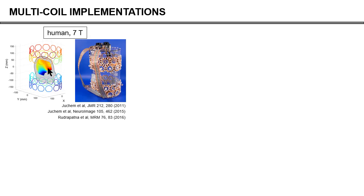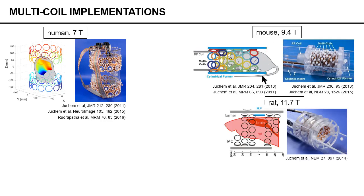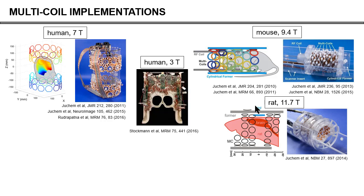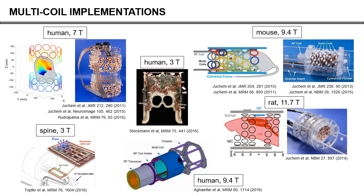We have used this multi-coil implementation on the human brain at seven Tesla, on the mouse head at 9.4 Tesla, and on rat brain at 11.7 Tesla. I'm very happy to see that other groups are now picking up this technology as well. The MGH group has applied it at three Tesla on human brain, combining the RF loop and the DC shim loop into one and the same loop, which is very efficient when it comes to space. Another nice application is a group using it for the human spine, incorporating these little DC coils in the patient bed, with really nice results. Very recently they've also used it on ultra-high field.